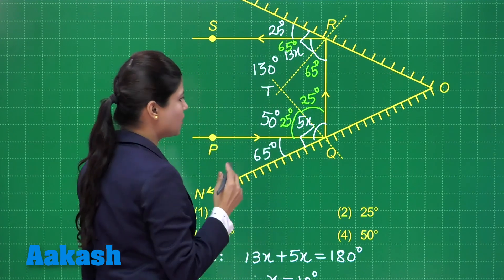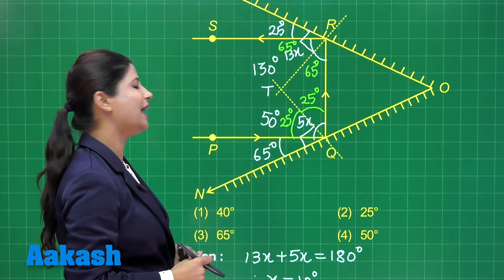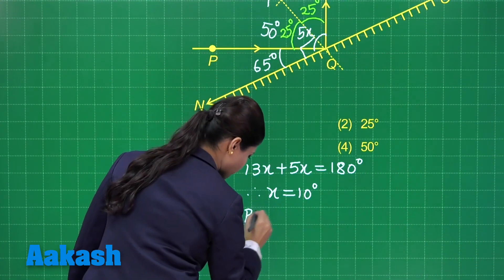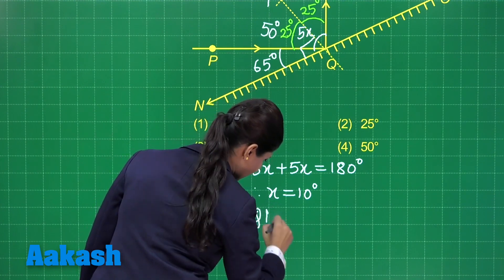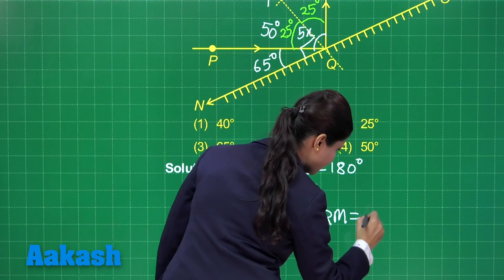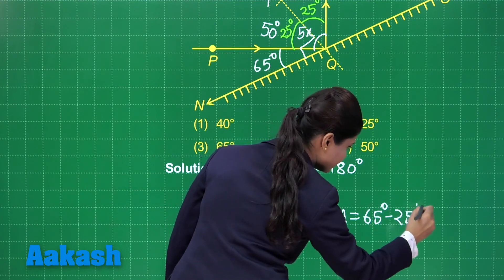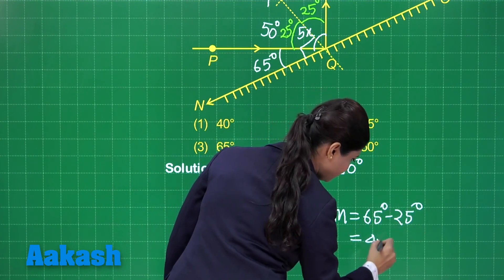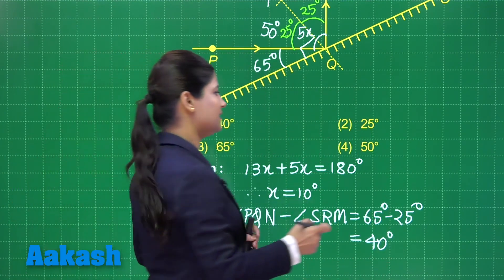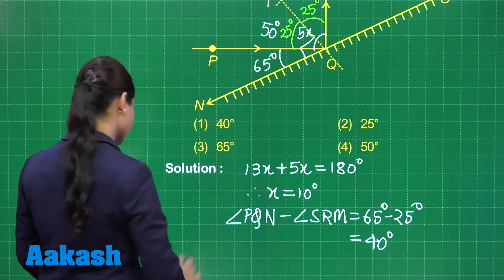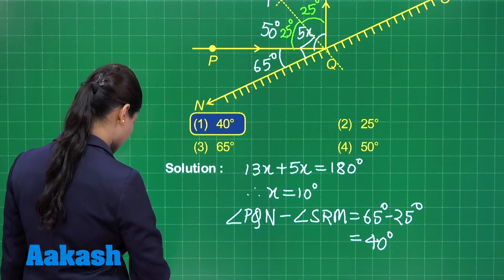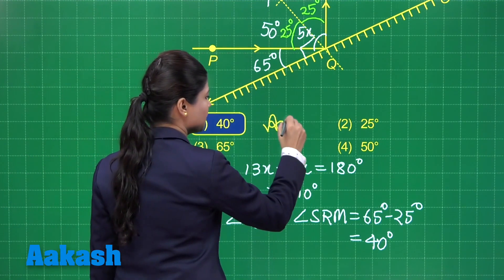Now we have figured out the measure of angle PQN and angle SRM. Angle PQN minus angle SRM is equal to 65 degrees minus 25 degrees, which equals 40 degrees. So the required answer for this question is 40 degrees. Out of the four options, the answer is option number 1.